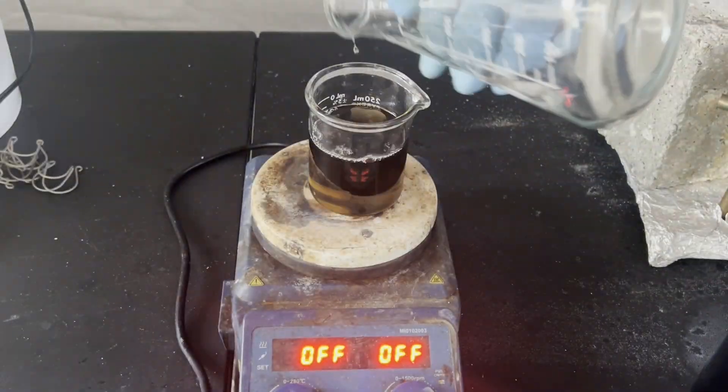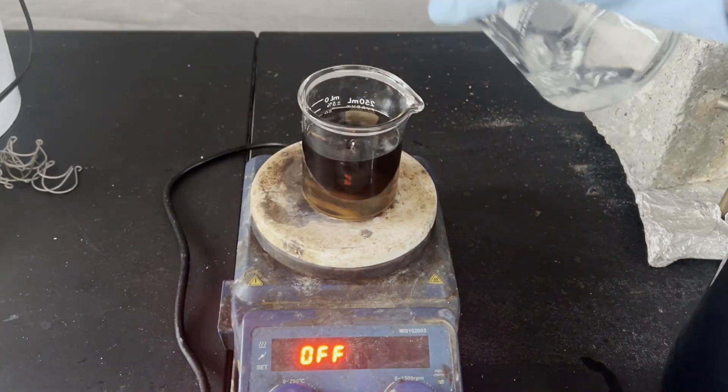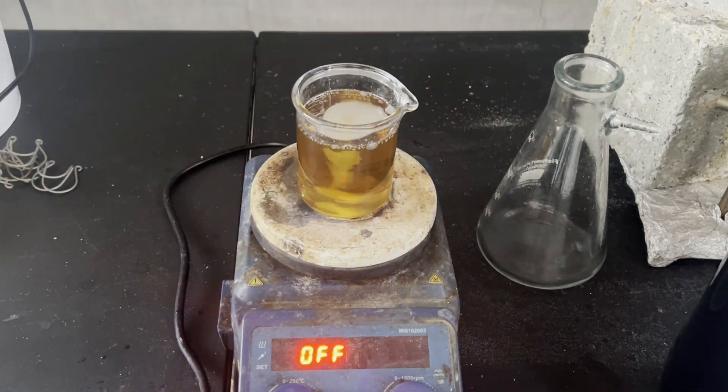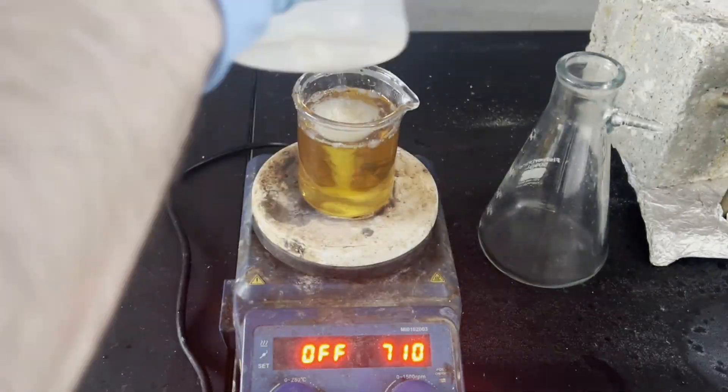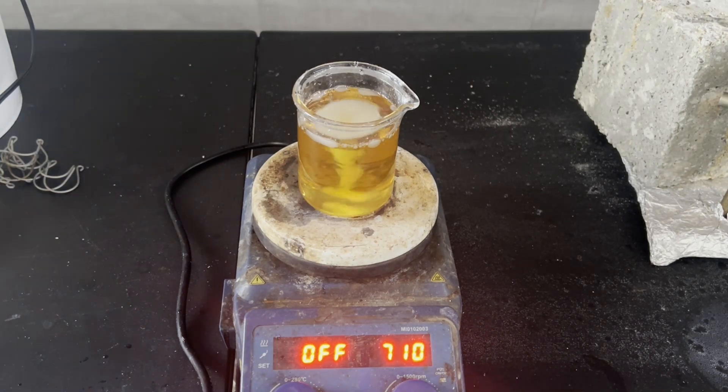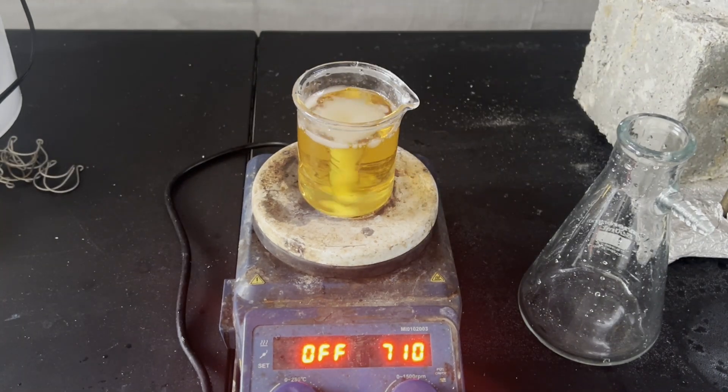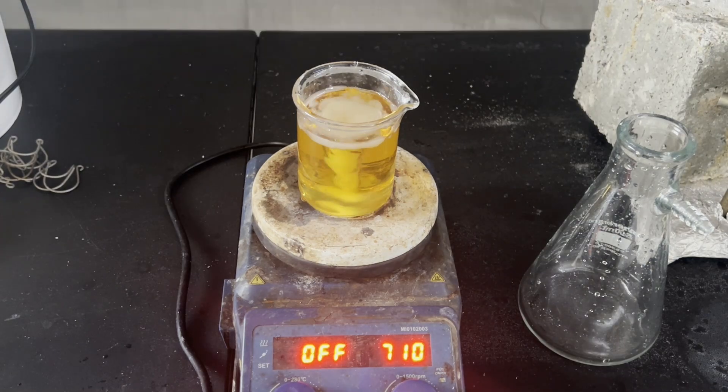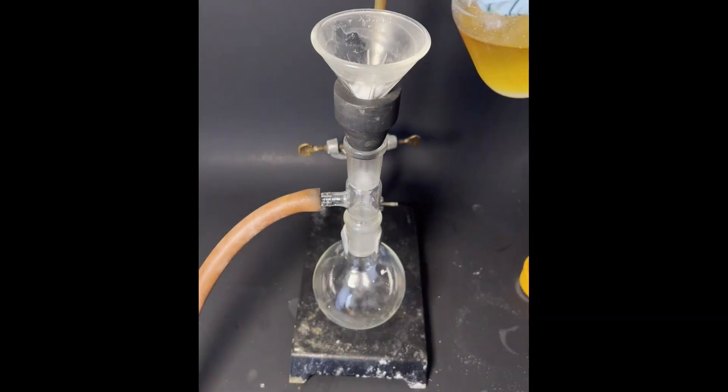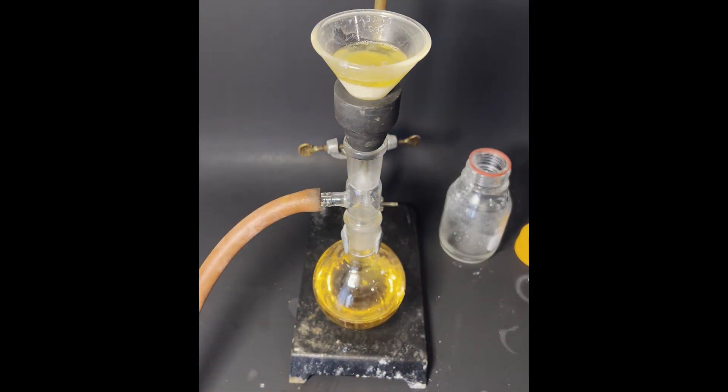I transferred the filtrate to this beaker along with the DCM washings of the reaction vessel and filter flask, and added distilled water to decompose the remaining anhydrous aluminum chloride. Like in the previous video, this caused the organic layer's color to go from dark brown to yellow. I heated the contents of the beaker to evaporate the DCM, adding water as the volume decreased.